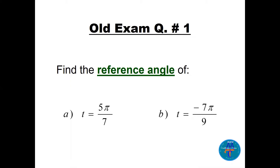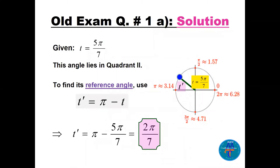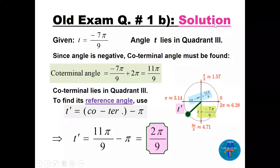We have t equals 5π/7 and t equals -7π/9. For the first part, 5π/7 is less than π so it lies in quadrant 2. In quadrant 2 the formula says t′ (the reference angle) equals π minus the angle itself, so π minus 5π/7.